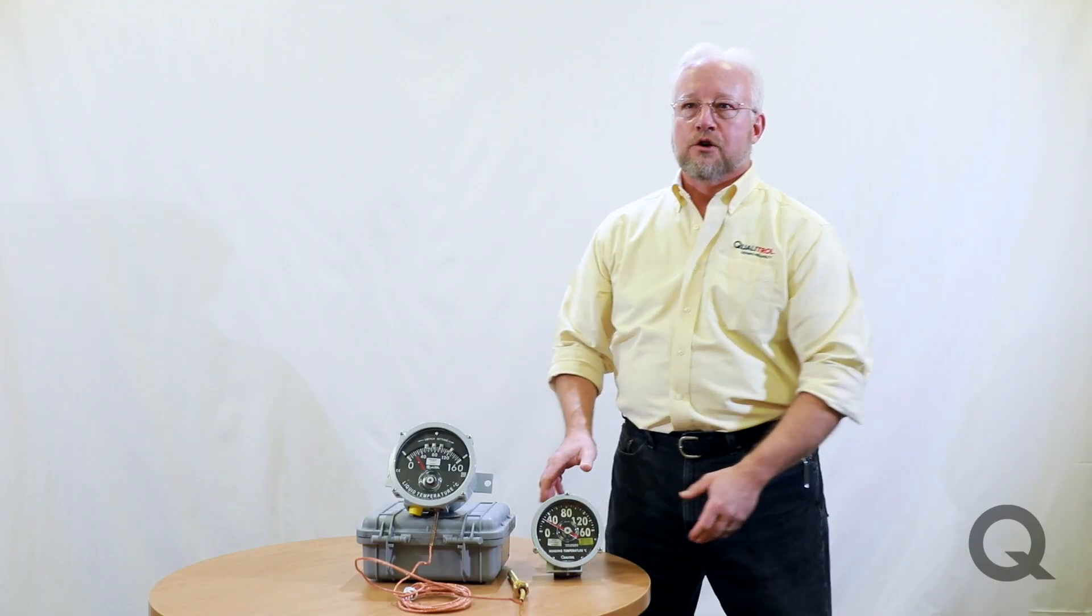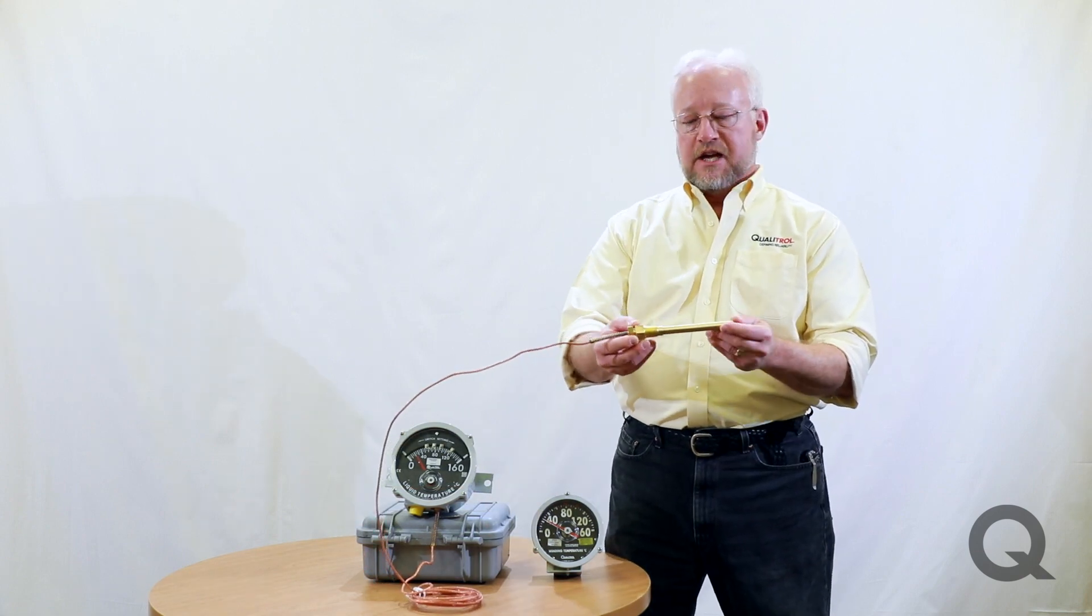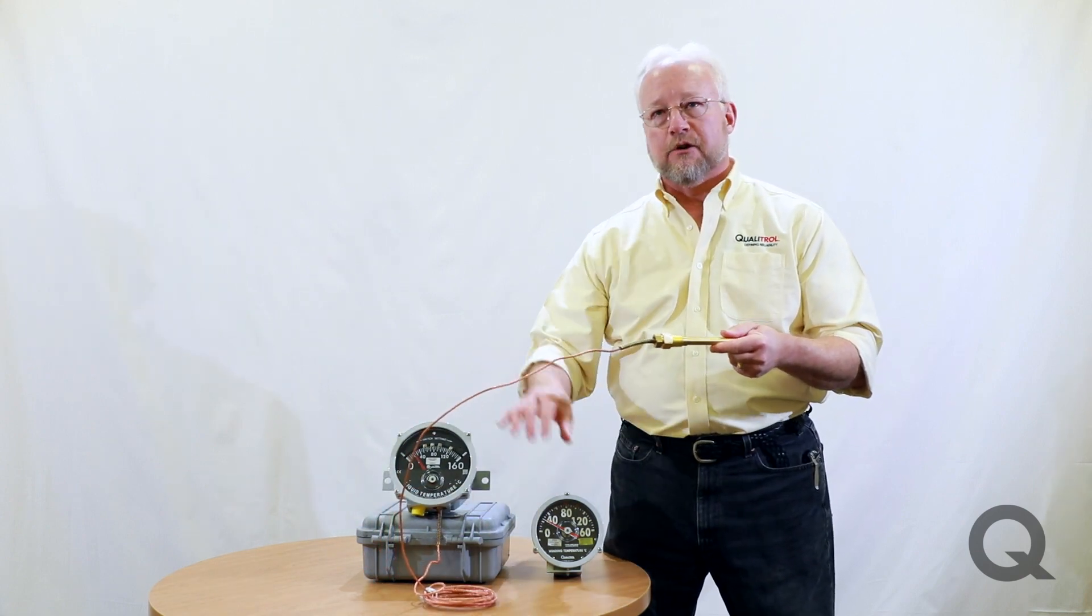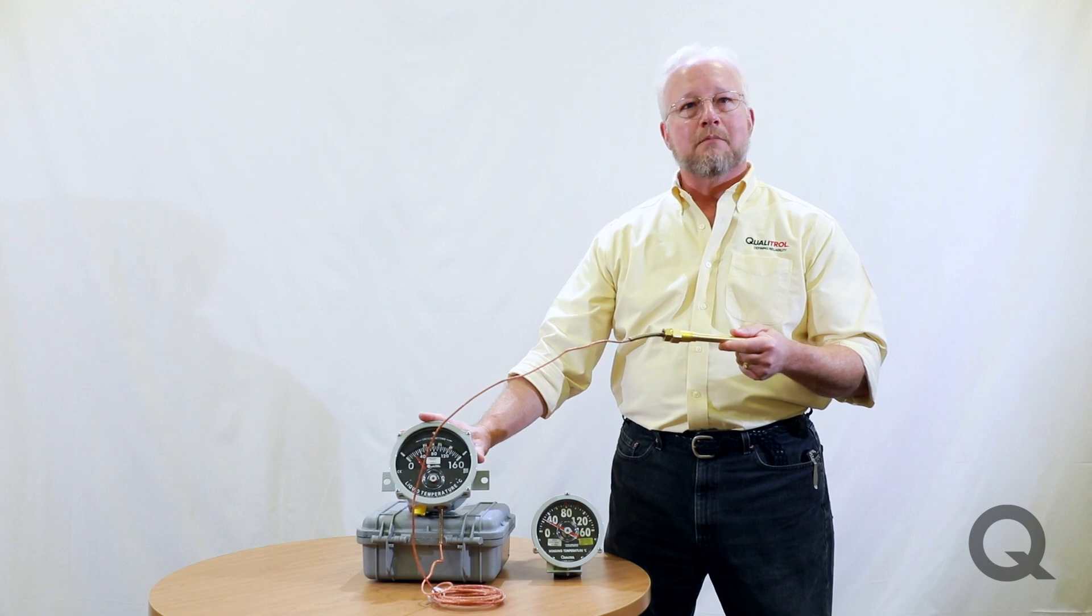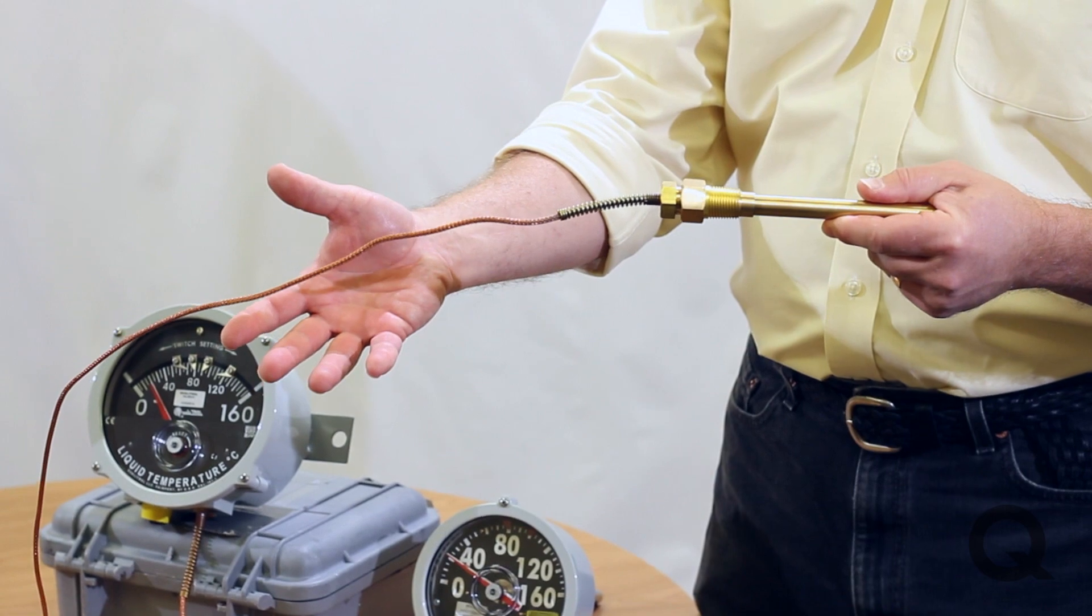On the remote mount, you're going to need to look at the capillary length as well, because this capillary is going to run back to wherever you mount the thermometer. If the capillary is too short, you've got a big problem.